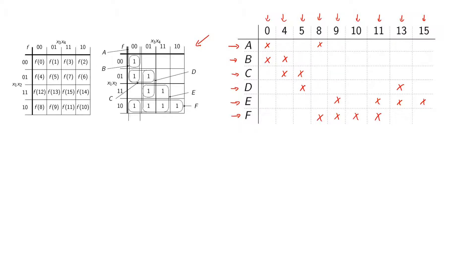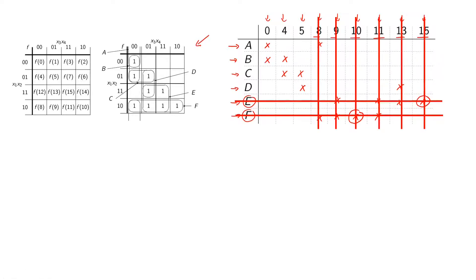Now we identify our essential rows — an essential row is one where an x is not represented in any other row. Row f is essential because its x for minterm 10 is not seen in any other row. Similarly, for prime implicant e, the x covering minterm 15 is not covered by anything else. Since these two rows are essential, we will use prime implicants e and f in our function, covering minterms 8, 9, 10, 11, 13, and 15. These columns can then be excluded as we proceed to the next step.